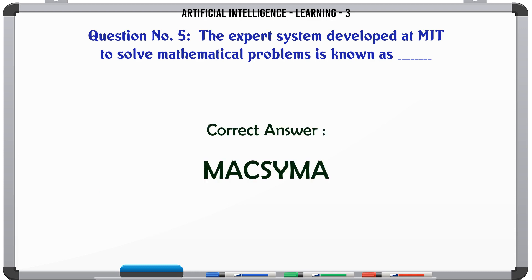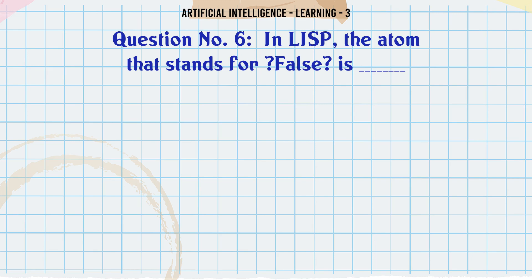In LISP, the atom that stands for false is: Option A: T. Option B: NIL. Option C: Y. Option D: TIME. The correct answer is NIL.